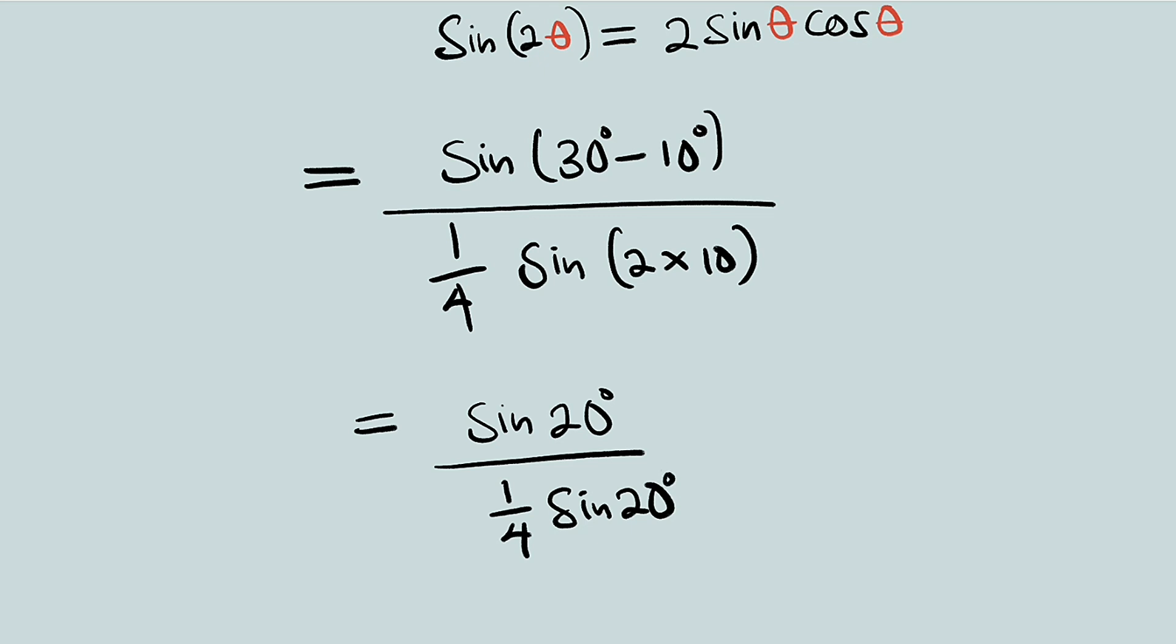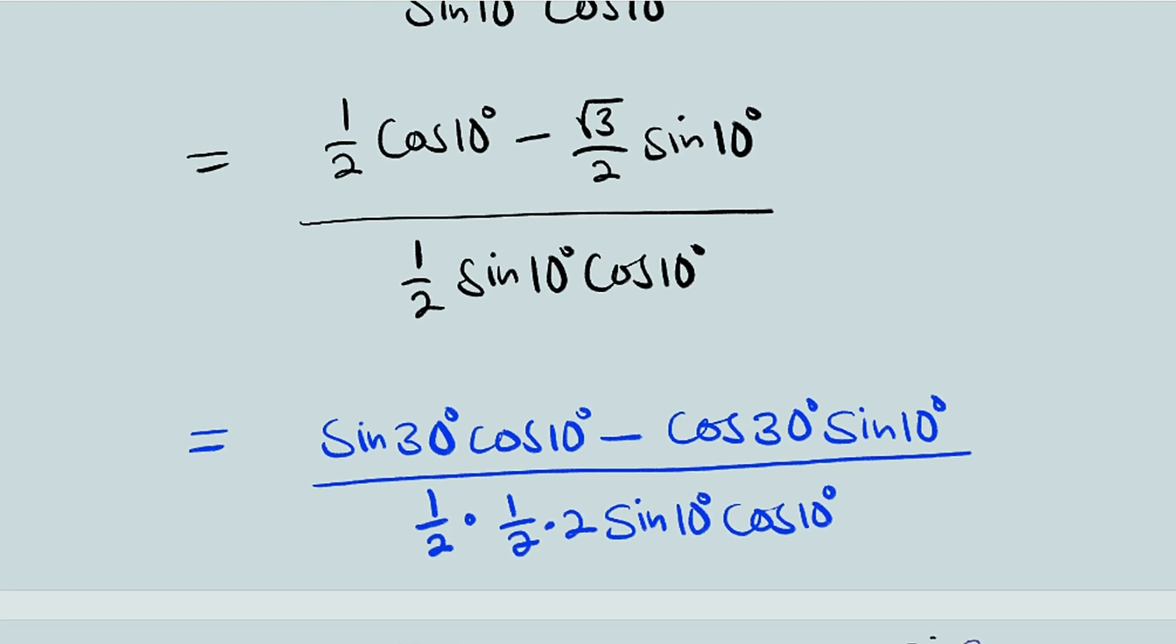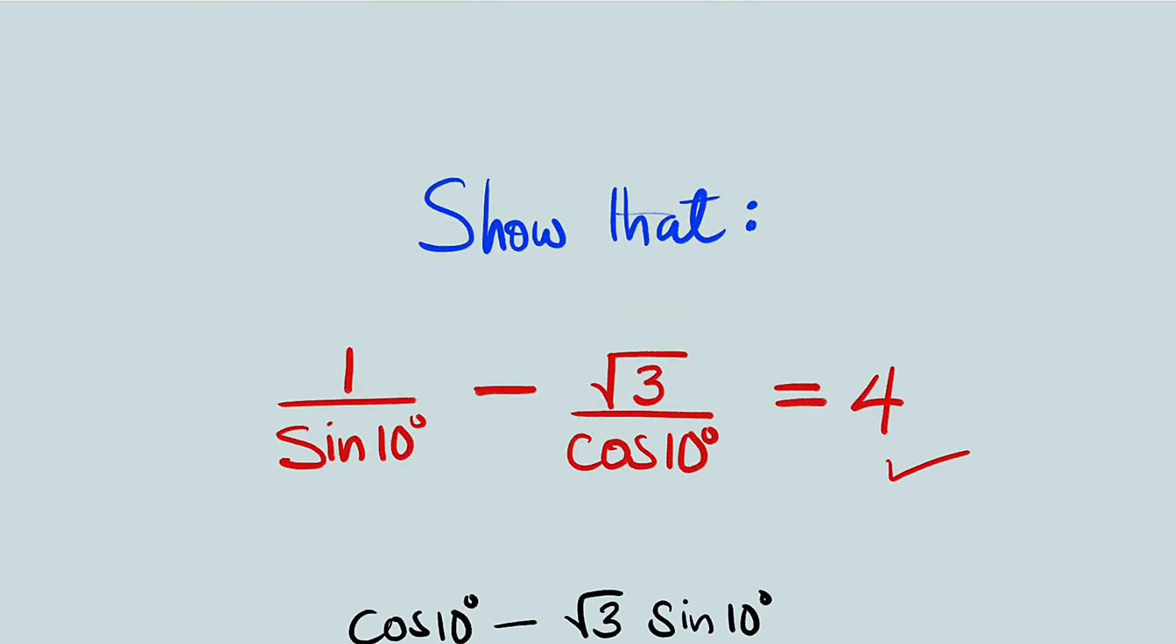Sine of 20 will cancel sine of 20. This is exactly equal to 1 divided by 1 over 4, which is just the reciprocal of 1 over 4, and this is equal to 4 exactly. Therefore, since it is equal to 4 which we have to the right-hand side, we can conclude that the left-hand side is equal to 4 and hence proved.